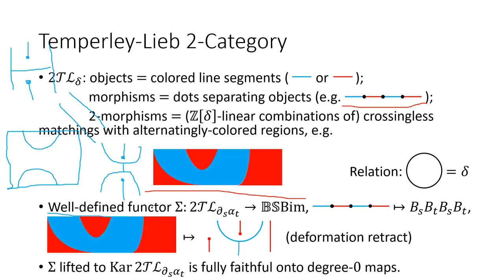If we lift sigma to the Karoubi envelope then it becomes a fully faithful functor onto the degree-zero maps. However, this is not good enough—we want to present BS-bim diagrammatically and this functor is not a categorical equivalence, so we need to seek further.